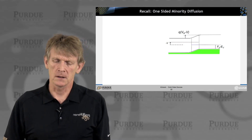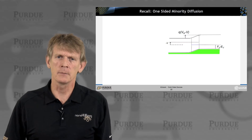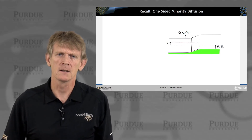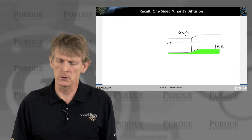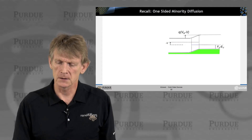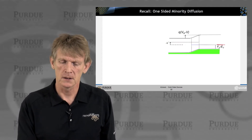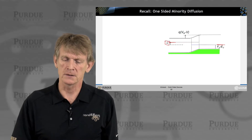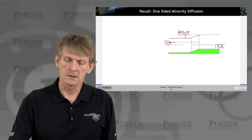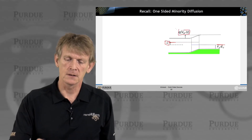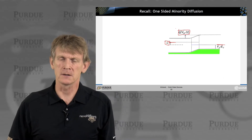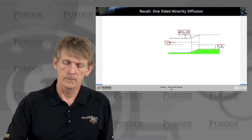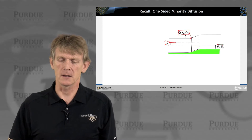We have a PN junction here now under bias. We have introduced a quasi Fermi level for the electrons and for the holes, as indicated here — here for the holes, here for the electrons. We have an applied voltage. The built-in field is reduced by the applied voltage; we have effectively reduced the height of the barrier.